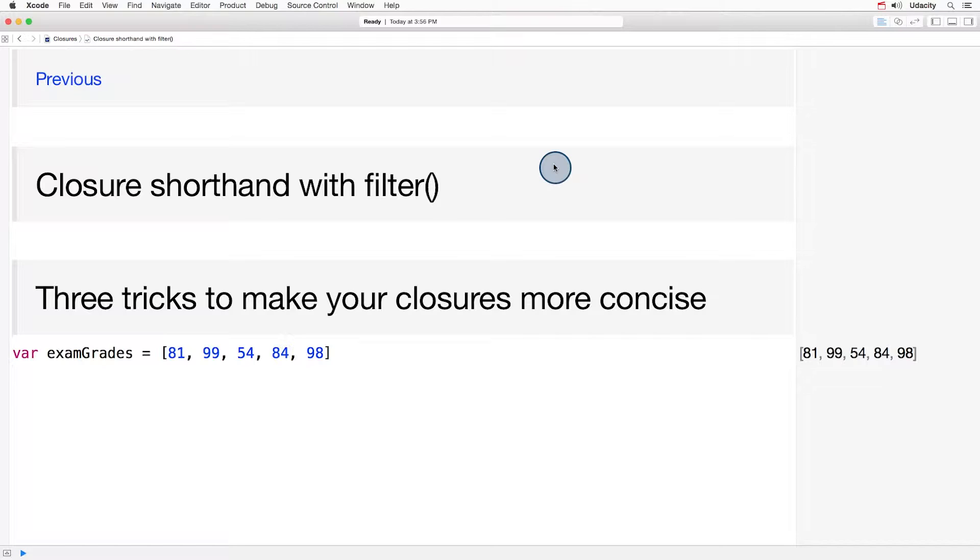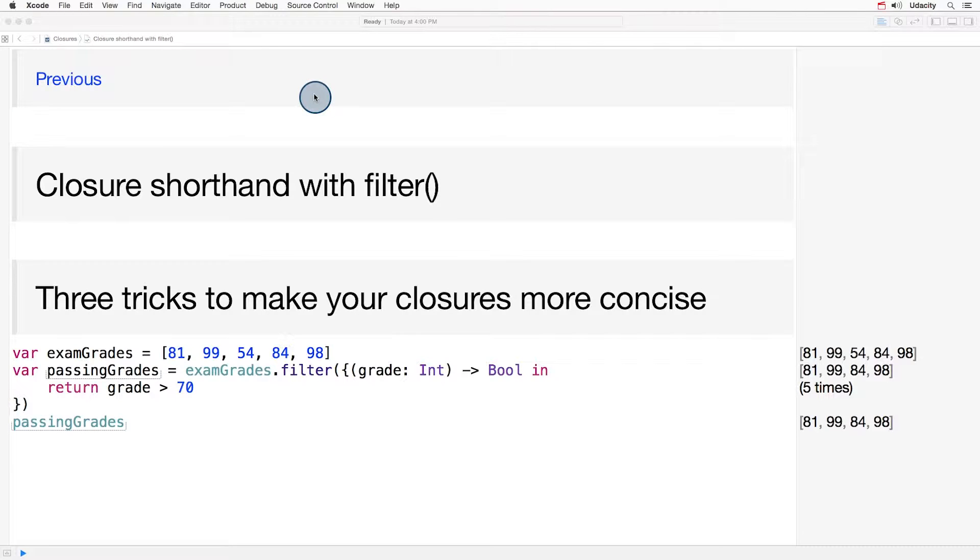I want to walk you through some of these tricks using the filter method from the array class. The filter method is called by an instance of the array class. It takes in a condition as an argument and returns an array that's been filtered based on that condition.